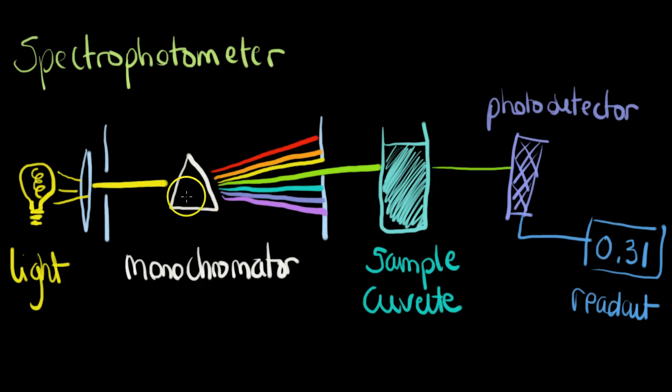This can be a prism like represented here or it can be a diffraction grating of some sort. The idea of a monochromator is it splits the light into mono, one color, so beams of a single color. This prism will take this beam of light and split it into different colors and different wavelengths of the electromagnetic spectrum.